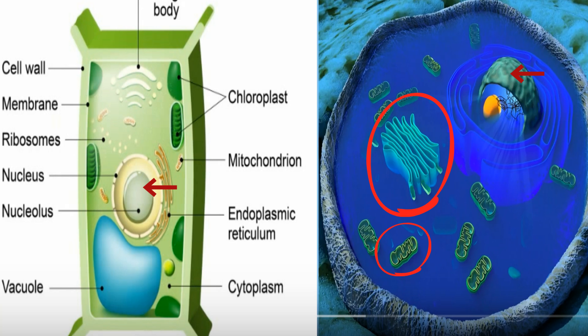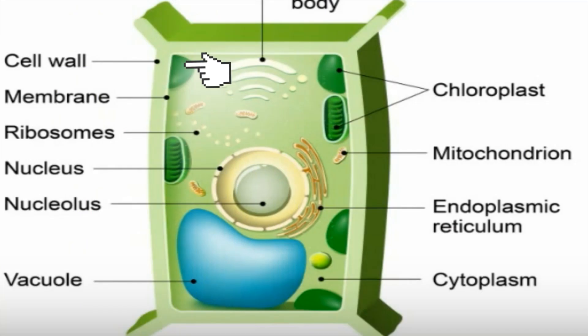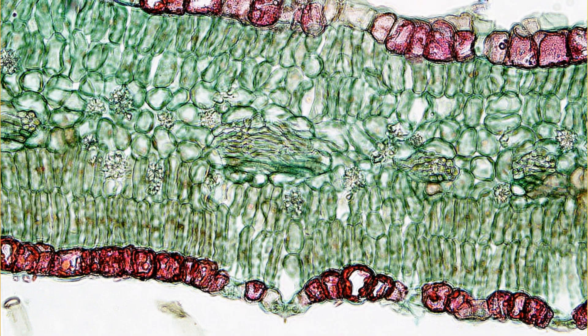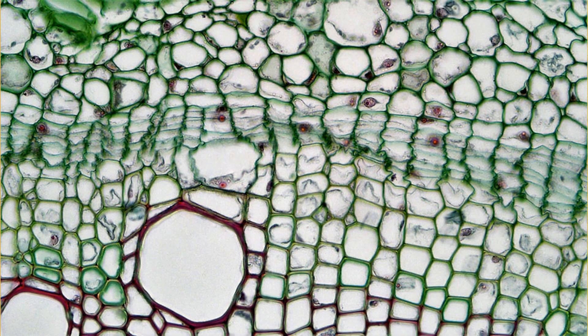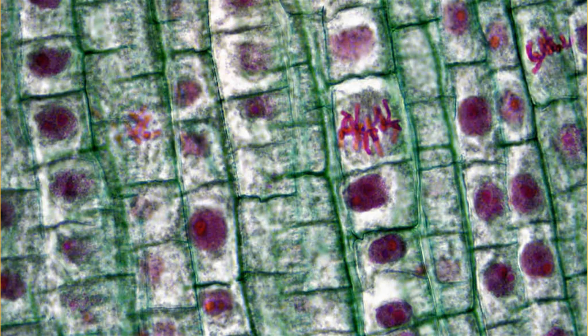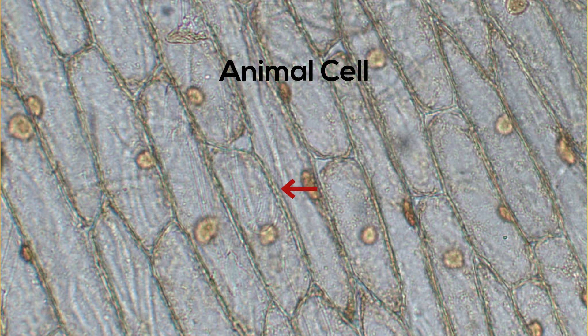However, they are also different. A plant cell has a cell wall which surrounds the cell. It makes the plant cell a little more rigid and gives it additional structure. If you look at these pictures of plant cells you will see the green cell wall that surrounds it. An animal cell only has a cell membrane and it is not quite as strong or rigid in structure as a plant cell.